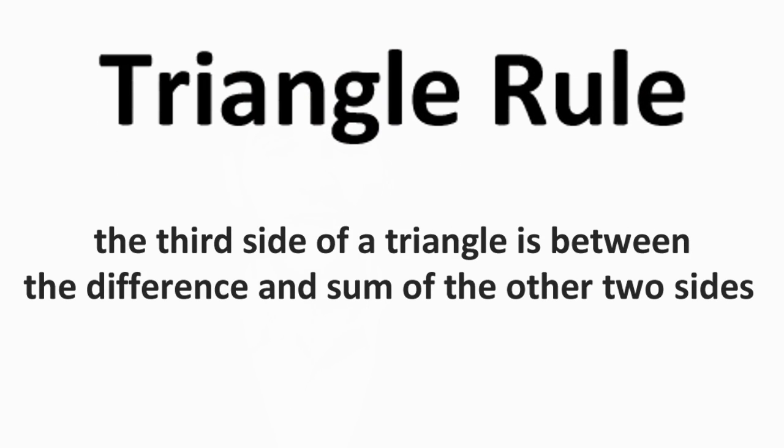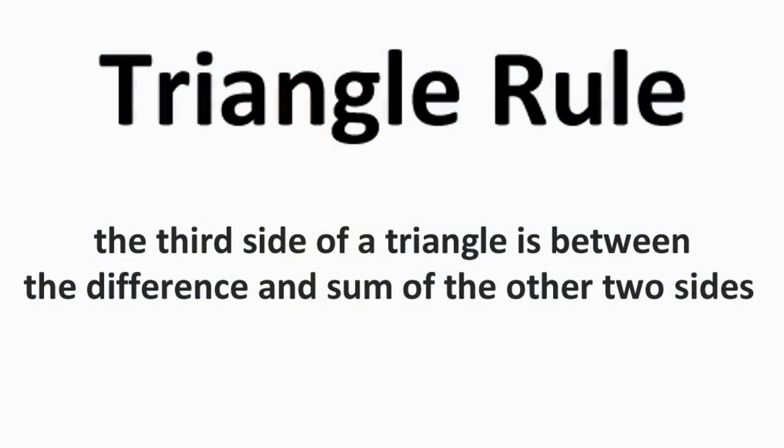Now on to triangles. The triangle rule states that the third side of a triangle is between the difference and sum of the other two sides. This is a very simple rule which is often not taught in the classroom. Triangle rule problems tend to be level 4 or 5 even though they are usually quite easy — many students simply have never learned this rule. See strategy 25 in the book for some examples.